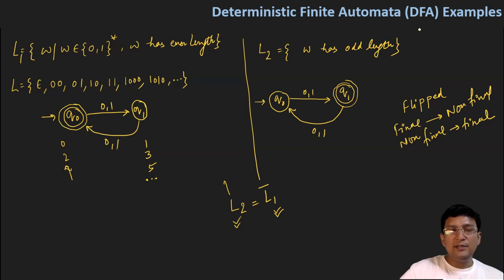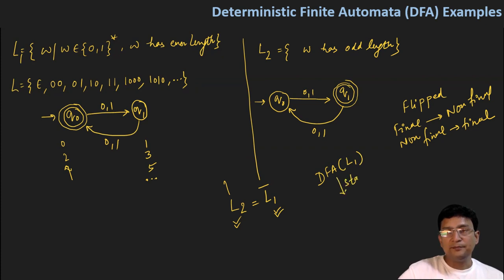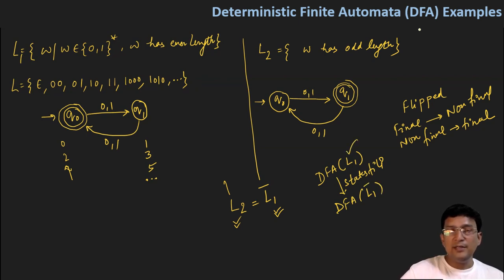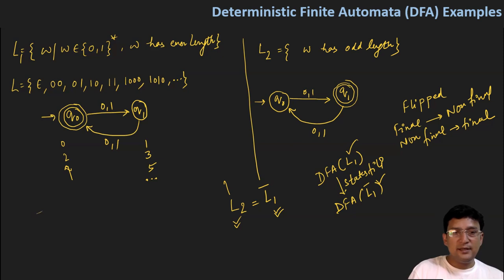If we have already made the DFA for L1 language, and in it we flip the states, then this DFA becomes the DFA for the complement of language L1. So the meaning of this is that the automata for L1 and L2 — we can build one from the other simply by flipping the states — and in this very easy way we have done the conversion of this automata.